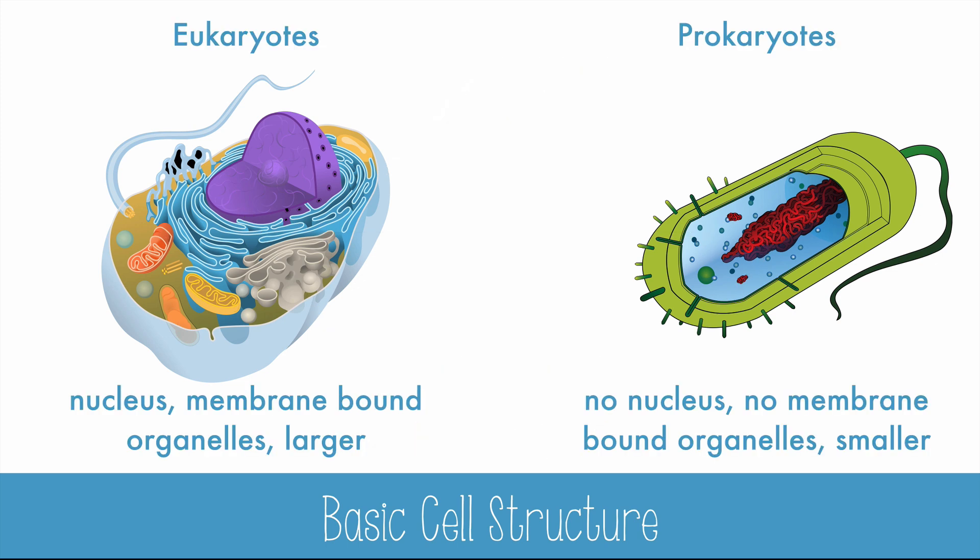The two cells here represent the two types of cells: eukaryotes and prokaryotes. Eukaryotes have a nucleus and membrane-bound organelles, and they're also larger than prokaryotes. Prokaryotes are much simpler than eukaryotes. Plants and animals are made of eukaryotic cells, and bacteria are prokaryotic cells.